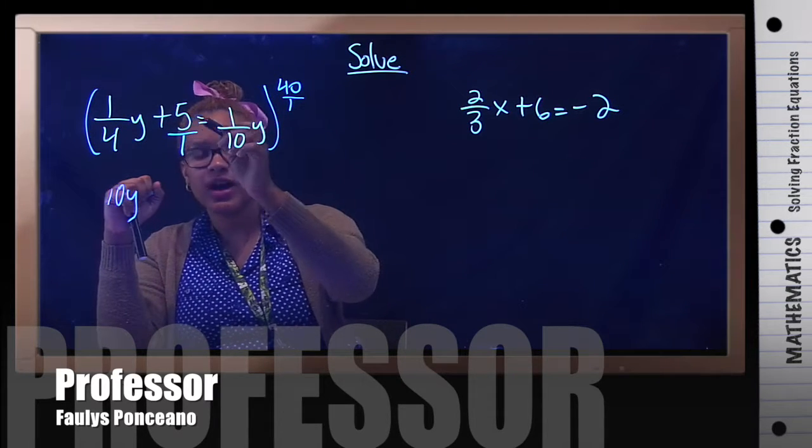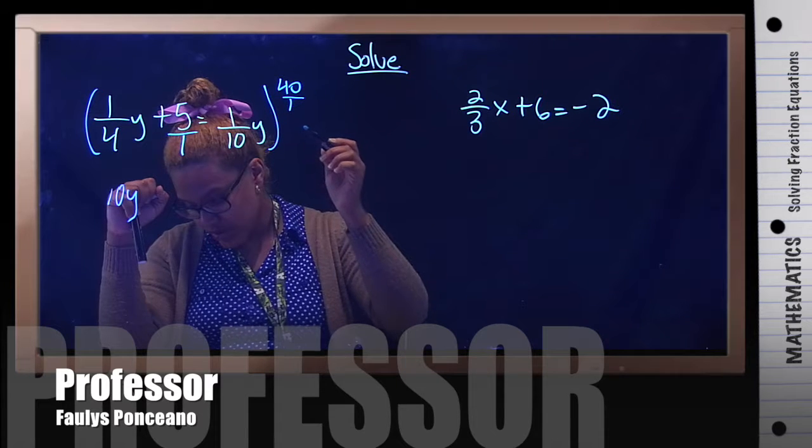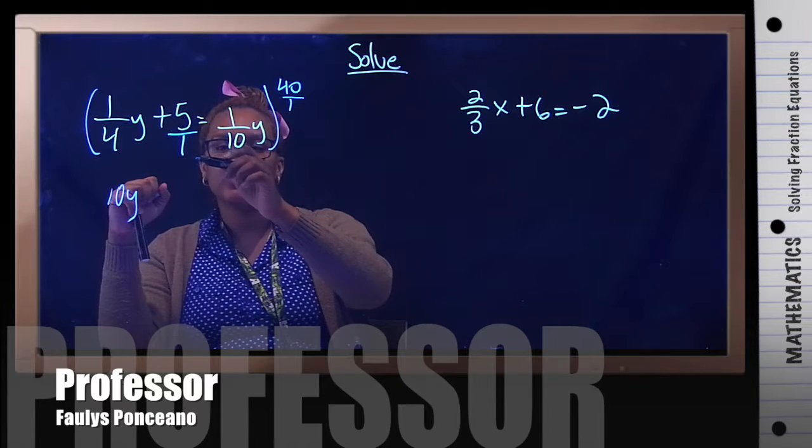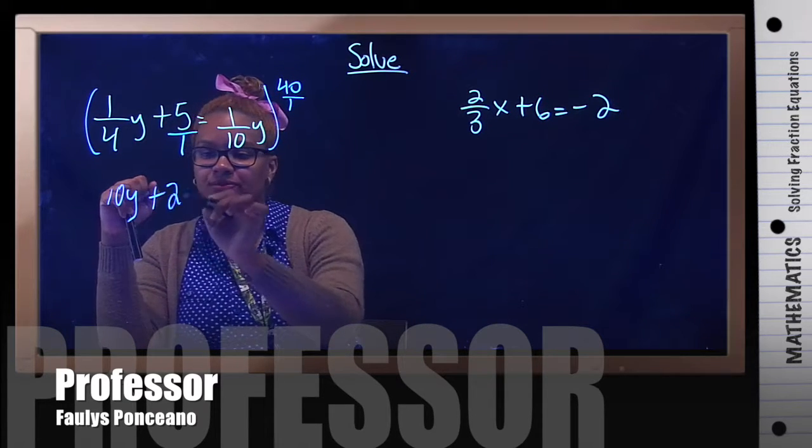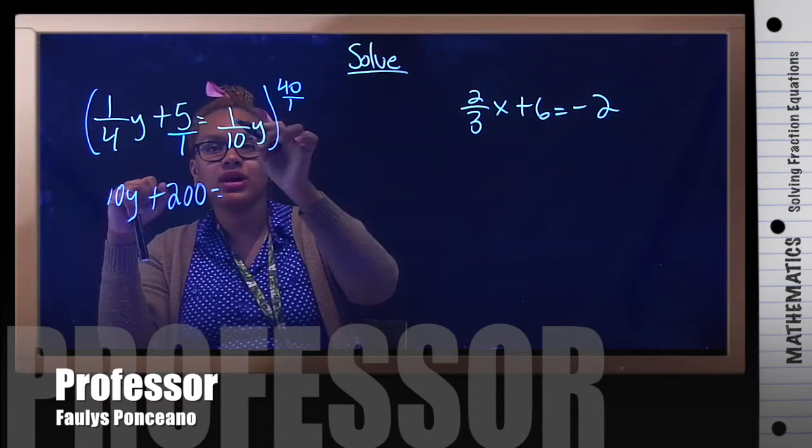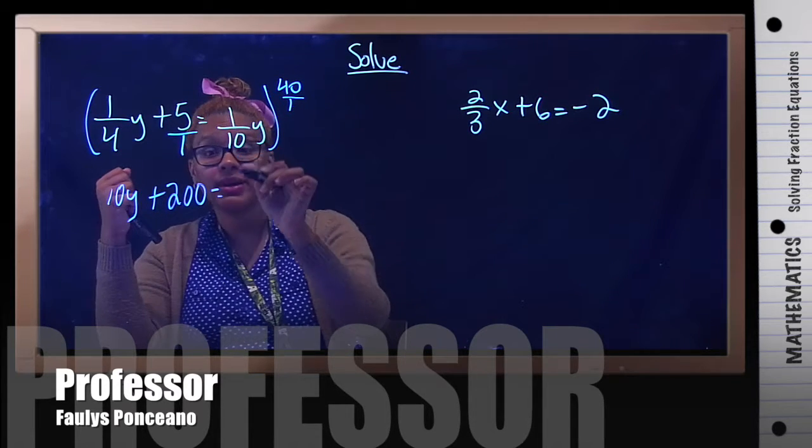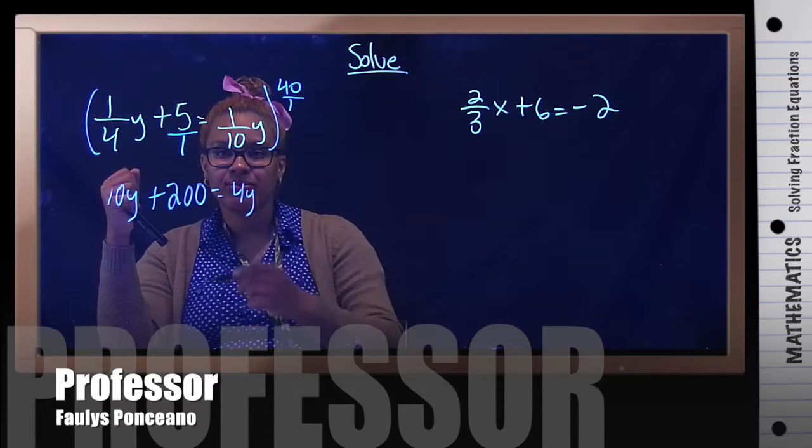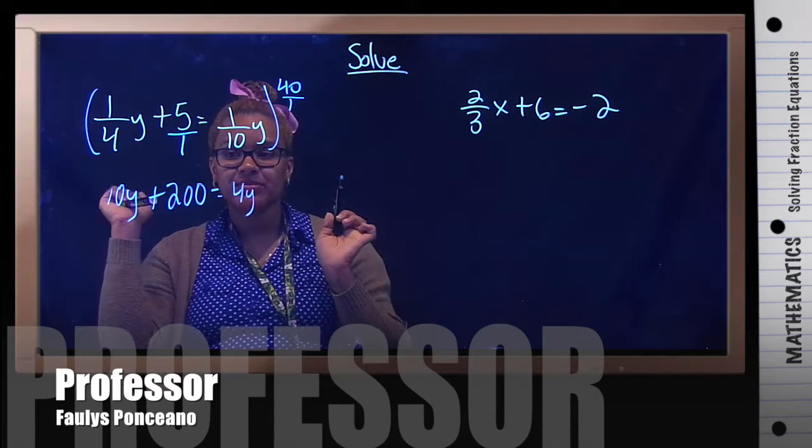40 times 5, I forgot that number, what is that? 200 divided by 1, just 200. 40 times 1 is 40 divided by 10 is 4y. That's it. No more fractions.